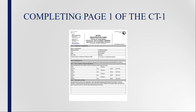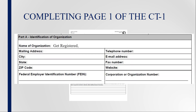Let's go over the required information on page 1 of Form CT-1. When filling out the form, it is important to ensure that the information provided is complete and accurate. The first page asks for the organization's legal name as stated in the founding document, such as the Articles of Incorporation, Articles of Association or Organization, Bylaws, or Trust Instrument. It is important to provide a valid mailing address, phone number, and email, as this is the information used by the Registry when contacting the organization.